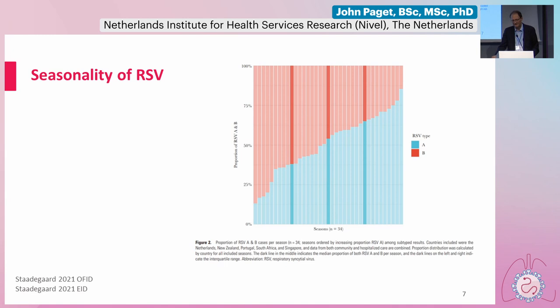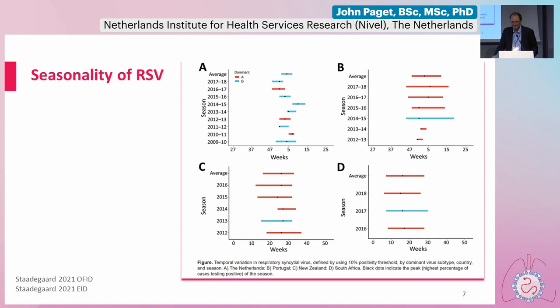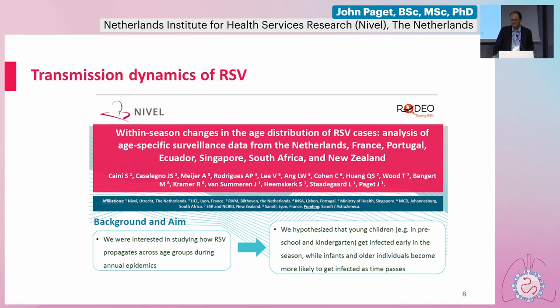Another interesting point about RSV epidemiology is that for flu, influenza B represents roughly 20 to 25% of cases across many seasons, with 75 to 80% being influenza A. For RSV, there's a much more even distribution of cases between type A and type B — that's another interesting difference. Some have thought there might be differences in the timing of RSV A and B; a Chinese study seemed to suggest this in Beijing. But when we looked at data for four countries around the world, we couldn't see any clear differences in the timing of RSV A versus RSV B epidemics.